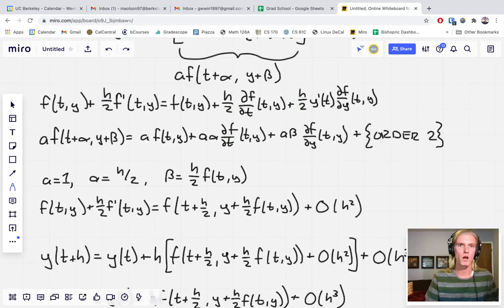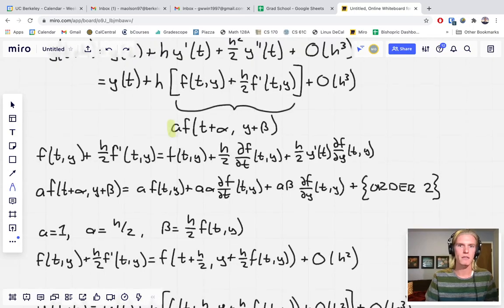Next, Taylor expansion again. We are expanding this replacement term, and we're doing that in this line here. So we have our constant there. We have linear terms, but this is an expansion in two variables. So we have partial with respect to t. And then because we're taking a step of alpha away from t, we have that step of alpha there.